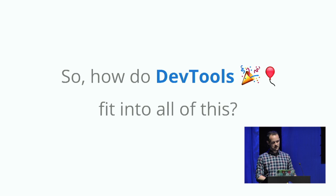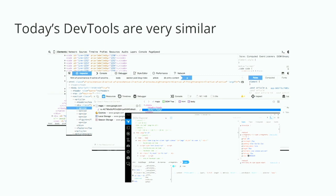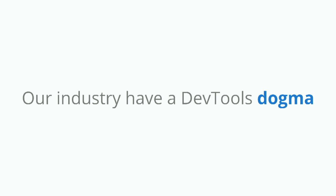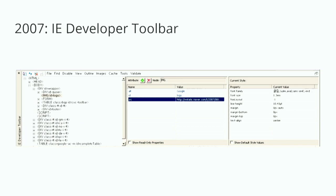My job at Microsoft is to think about how DevTools fit into all this. When I look at the DevTools we're shipping today, they're all very similar. The DevTools we ship in Edge and what Google ships in Chrome all have the same kind of functionality. Our industry has a DevTools dogma — a preconception that a DevTool is something installed as part of your desktop browser, docked at the bottom of your screen, with a DOM Explorer, a Scripts tab, a network tool. And I'm asking myself: is this really the best we can do? Even compared to the 2007 IE Developer Toolbar, today's tools are theoretically kind of the same.